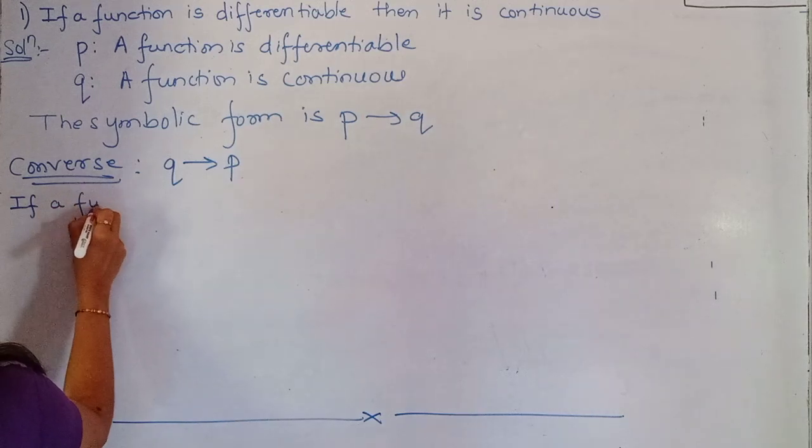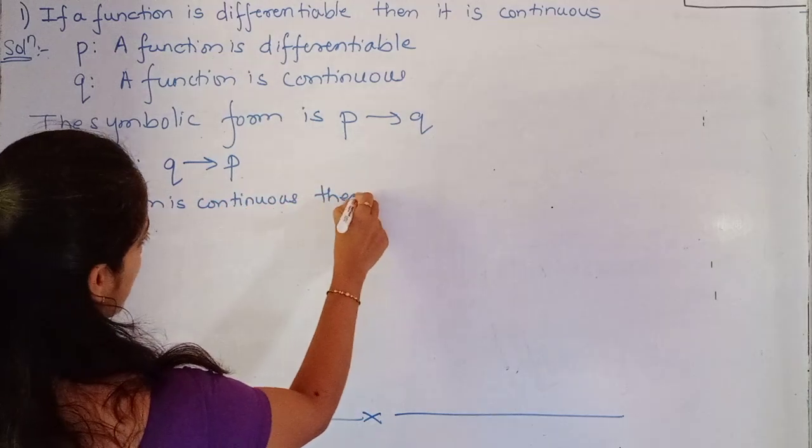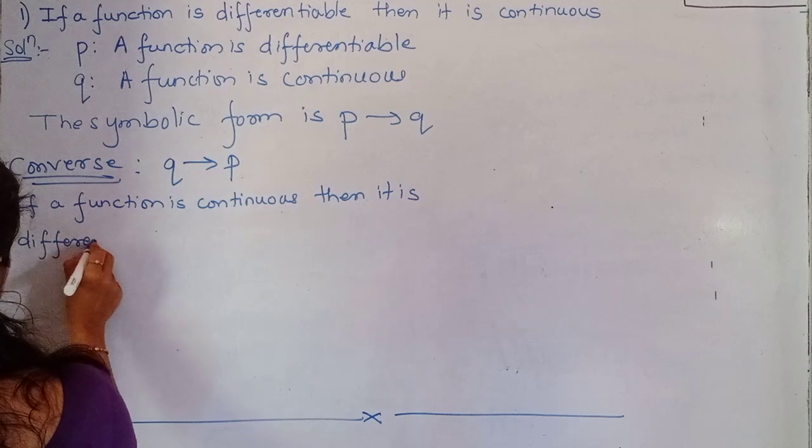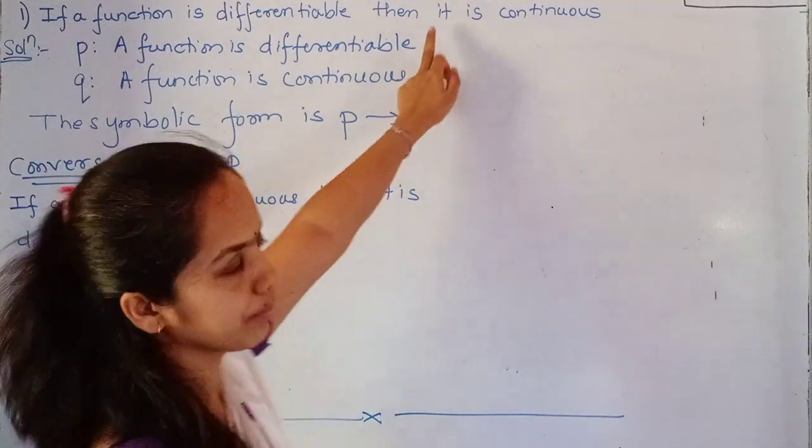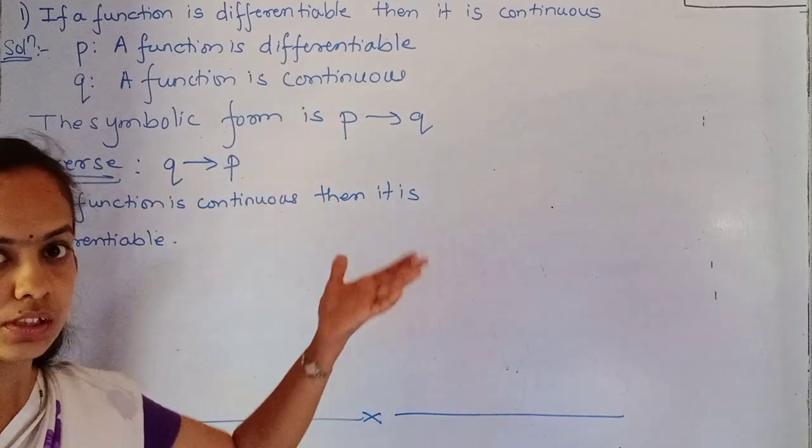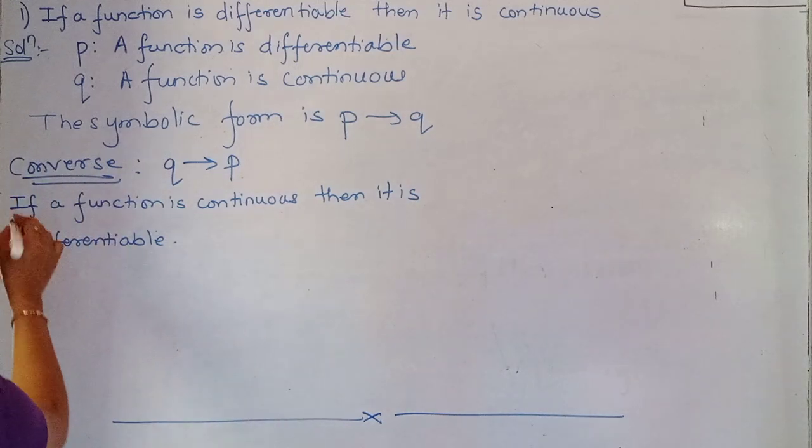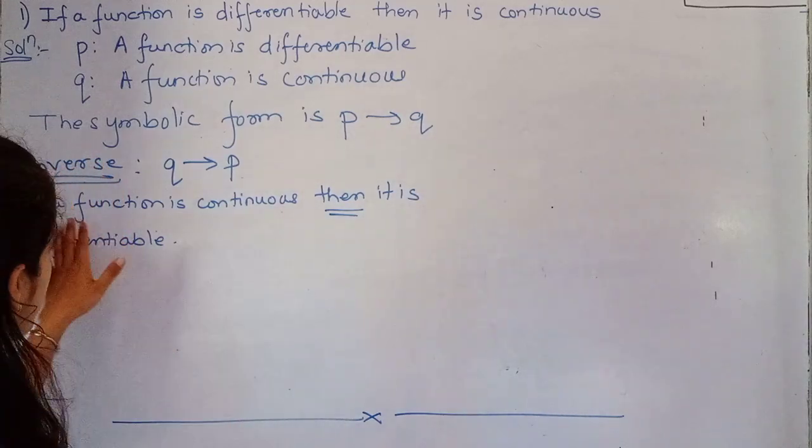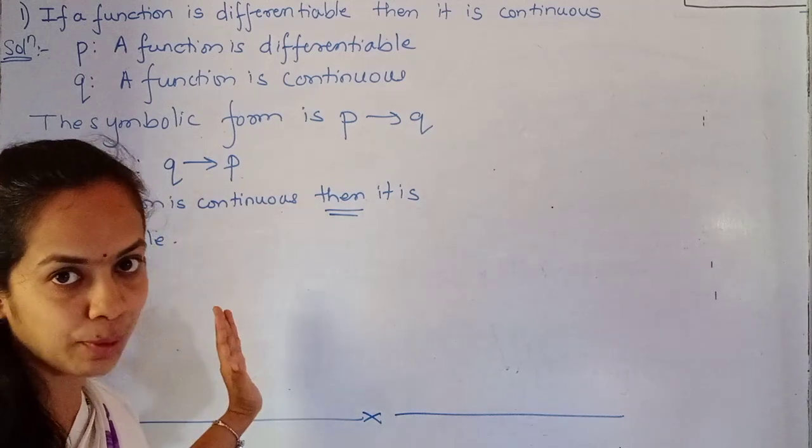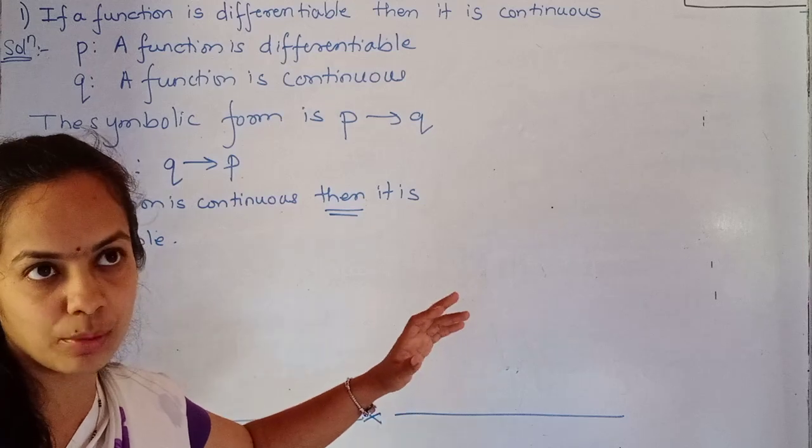If a function is continuous, then it is differentiable. Notice one thing: when we write the statement for the function, we use 'is', 'it'. When we take P and Q, the name is given there. So we don't write 'it' there. If and then is very important, don't forget it. So if a function is continuous, then it is differentiable. In the 'then' part we use 'it', that is okay, but here don't use 'it'. It would not be grammatically correct to say 'if it is continuous'.